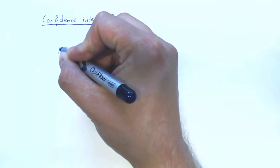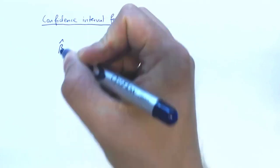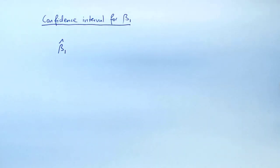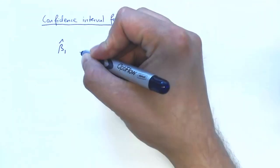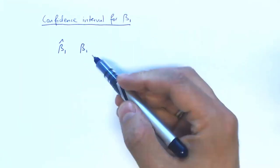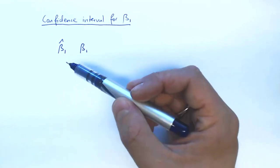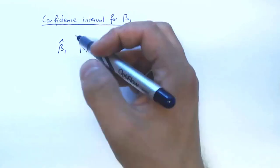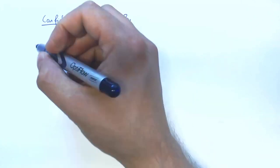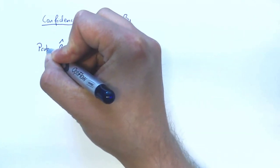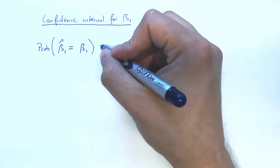So remember our OLS estimator beta 1 hat, it's basically for every sample giving us a number and an estimate, and we're saying this is our best guess for the unknown population coefficient beta 1. But actually we will always be a little wrong, so we will never get this exactly right, or the probability of us getting this exactly right is zero.